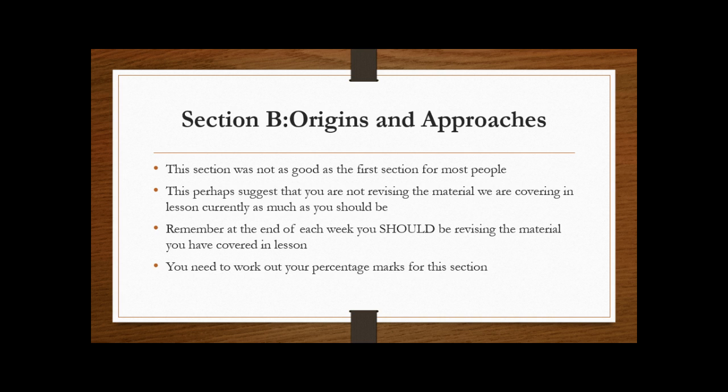Okay, so the second section, Origins and Approaches, unfortunately was not as good for most people. Some people excelled at this section, but the vast majority of you—this was kind of a chink in the armor. I'm presuming with my students that you're not revising the material as we're covering it. This was the most recent stuff that we've done in lesson. Obviously, as we count down to the exams now, you should be going back over everything that you've covered in lesson on a weekly basis. Like we did for the first section, please work out the percentage for your marks.